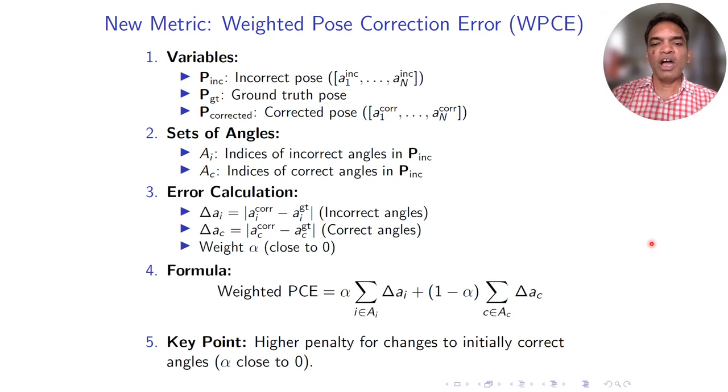We have introduced a new metric called weighted pose correction error. It is not enough to correct the incorrect joints in a given incorrect pose. It is also important that we don't touch the already correct joints. If our method corrects already correct joints, we introduce a penalty of one minus alpha, with alpha being very close to zero. This is how we define weighted PCE.